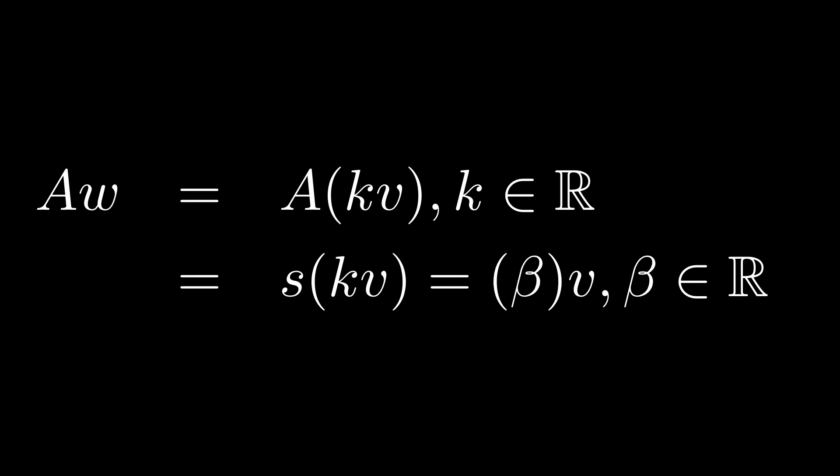But by similar logic, we know that beta times v, which is just another vector, which points along the eigenvector v. This shows that if any point is along an eigenvector of A, it must stay on that eigenvector.